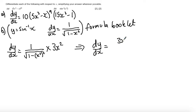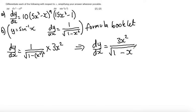Simplifying, dy by dx is 3x squared over the square root of 1 minus x to the power of 6. Just be careful — make sure you multiply those indices, don't add them. Let's go on to part C.